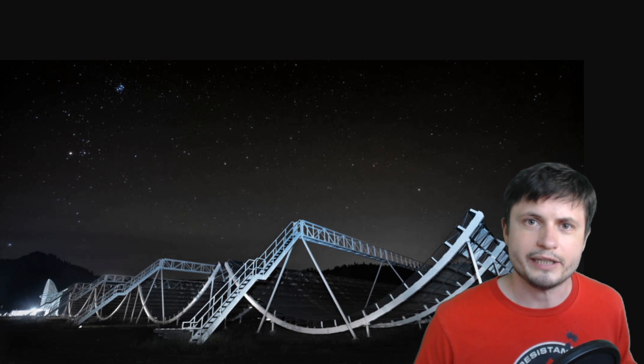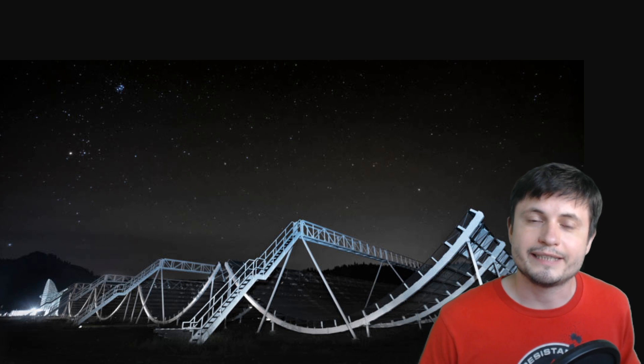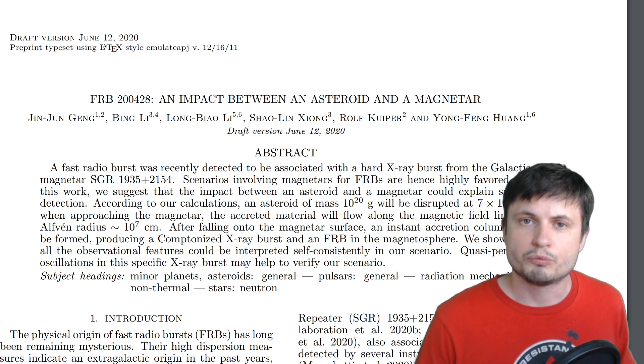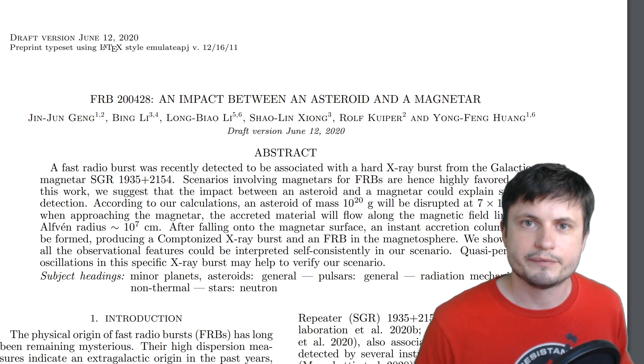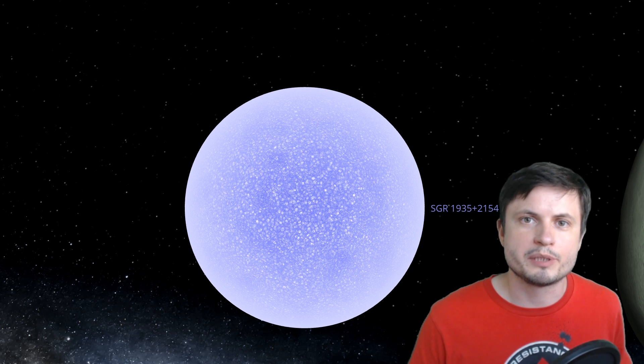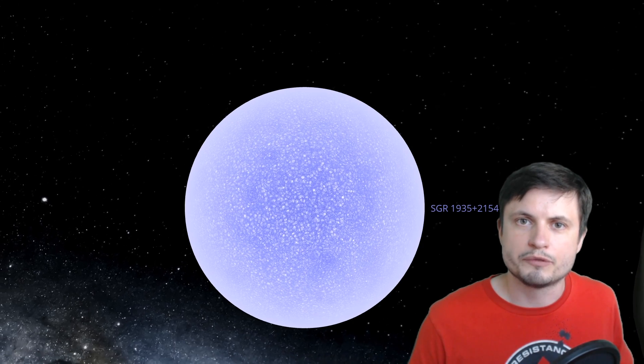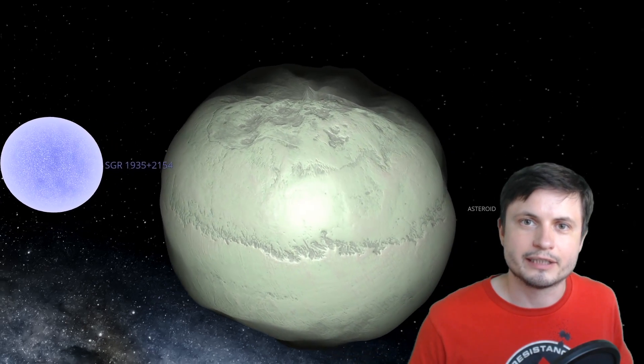There are actually a few answers currently, but the best one is in regards to a possible collision with an asteroid. And the paper about this you can also find in the description below. So what the scientists here suggest is that something like this happened. Now this is going to be an extremely primitive representation of this, but here is a neutron star, this is just a regular pulsar that we have in Universe Sandbox simulation. And here is the potential asteroid that collided with it.